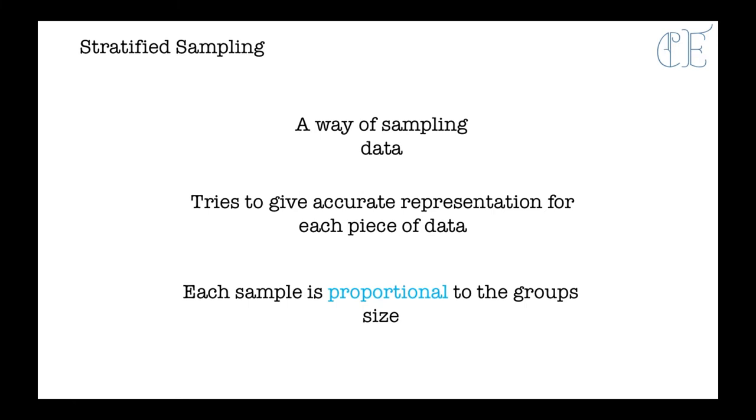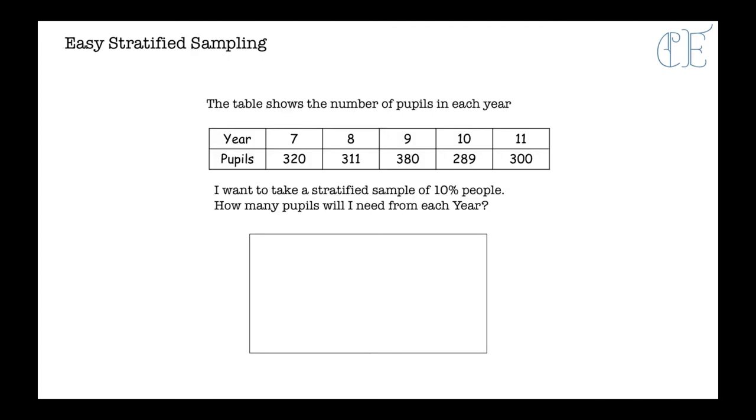So what that means is that if you had a school with 2500 pupils in it, but you didn't want to interview or give a questionnaire to all those pupils, you could take a sample of 10% from each year group or something like that. For example here we have a table which shows the number of pupils in each year. Obviously there's not as many students as I was giving the example just a second ago, but we do have the number of pupils in each year here.